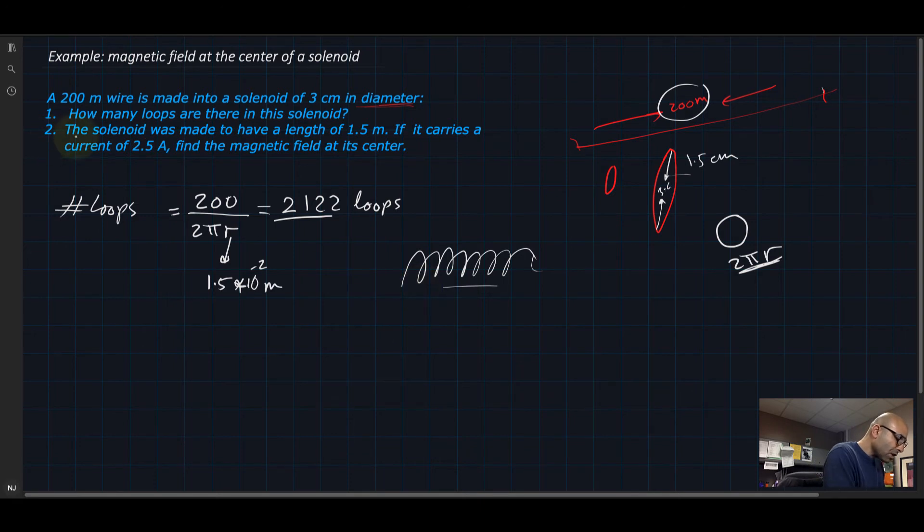Now the second part: if the solenoid was made to have a total length engineered to be 1.5 meters long, and it carries a current of 2.5, what is the magnetic field at the center?